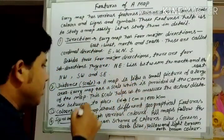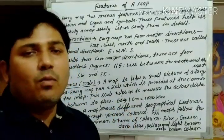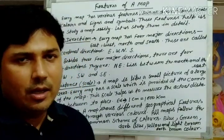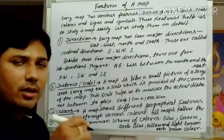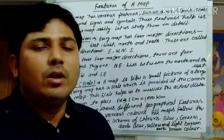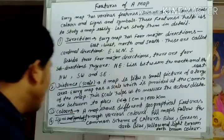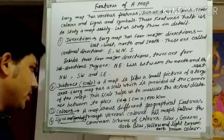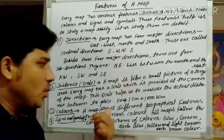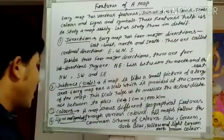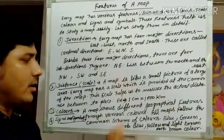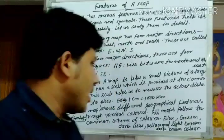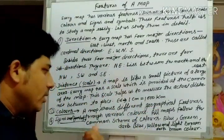The scale shows the actual distance between two places. For example, 1 cm on the map may be equal to 1,000 cm in actual distance, representing the actual size of the area.